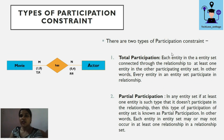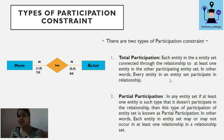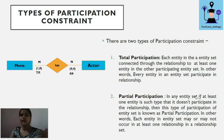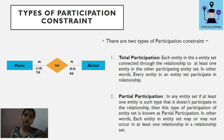Total participation means each entity in the entity set is connected through a relationship to at least one entity in the other participating entity set — every entity in the entity set participates in the relationship. Partial participation means at least one entity in the set does not participate in the relationship — some entities may participate and some may not.